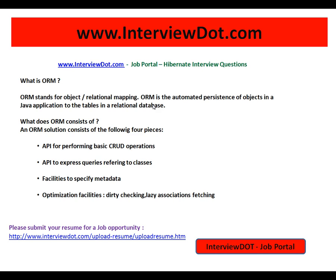Hibernate takes care of reading from the database and gives you the results as Java objects, doing the mapping from objects to the relational database. An ORM solution consists of the following four pieces: an API for performing basic CRUD operations, an API to express queries referring to classes, facilities to specify metadata, and optimization facilities such as dirty checking, lazy associations, and fetching.